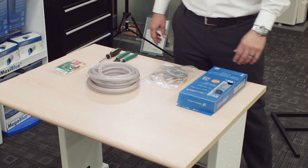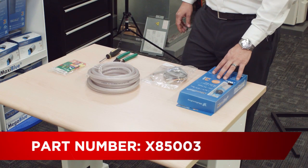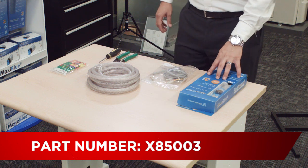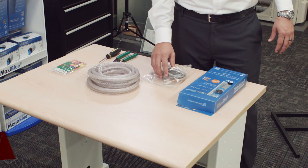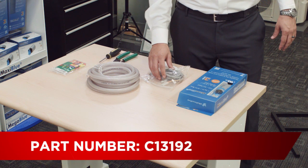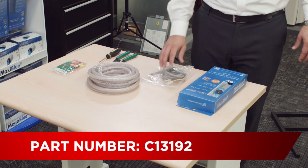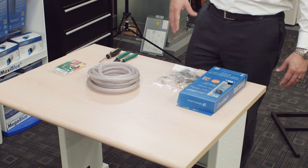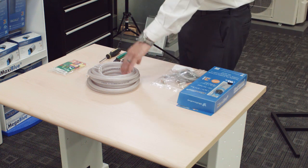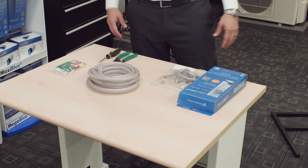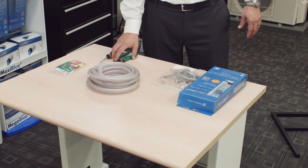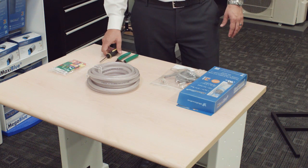Today for the install, we'll be using a micro blue, part number X85003. We'll also be using our alarm extension cable, part number C13192. Contractor or installer will need to source quarter inch ID vinyl tubing and wire nuts. And you'll be using your typical hand tools, wire cutters and Phillips head screwdriver.